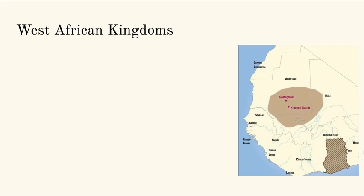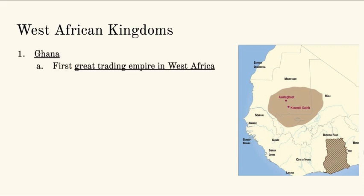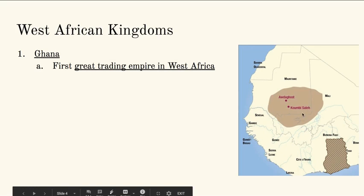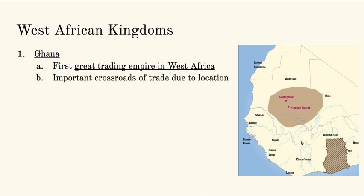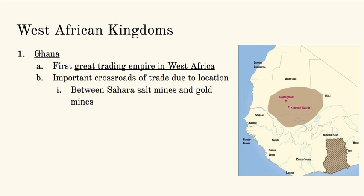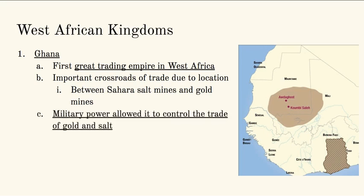We need to talk about the West African kingdoms. The first one we're going to focus on is Ghana — the first empire within Western Africa. You can see on the map it wasn't necessarily that large, but it is the first empire that we have record of. It was really important in regards to trade because of its location — it was at the crossroads where trade had to go through Ghana no matter where you were going. It was located between the Sahara salt mines and the gold mines. Because those are the two most valuable resources Africa has, Ghana was perfectly situated and could make a lot of money. The empire relied on its military power not necessarily to control its people, but to control the trade of gold and salt — you really couldn't get gold or salt from Africa without going through Ghana.